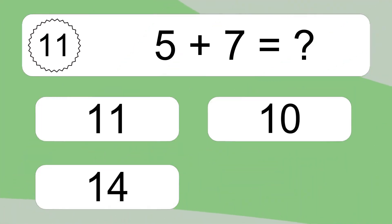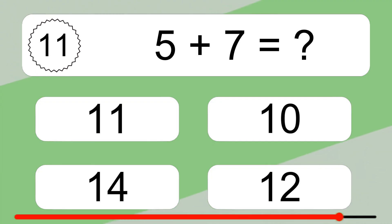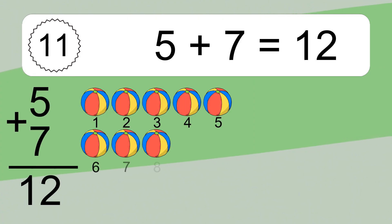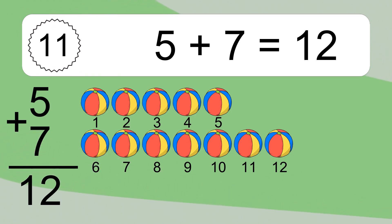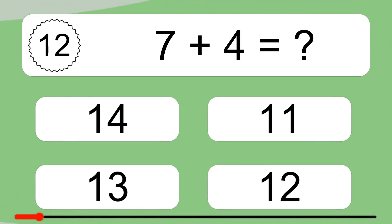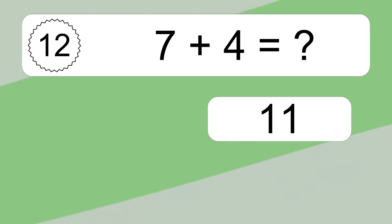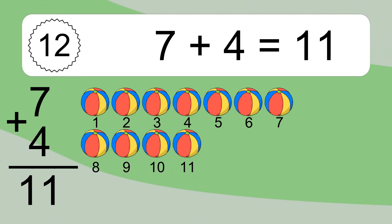5 plus 7 equals what? 5 plus 7 equals 12. Let's count it: 1, 2, 3, 4, 5, 6, 7, 8, 9, 10, 11, 12. 7 plus 4 equals 11. Let's count it: 1, 2, 3, 4, 5, 6, 7, 8, 9, 10, 11.